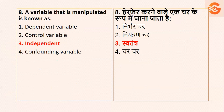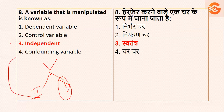Next: a variable that is manipulated. Variables kitne type ki hoti hai? Two — one is called independent and one is called dependent. The variable which is manipulated is known as the independent variable. So the answer is independent variable.